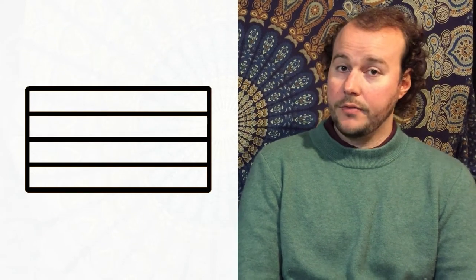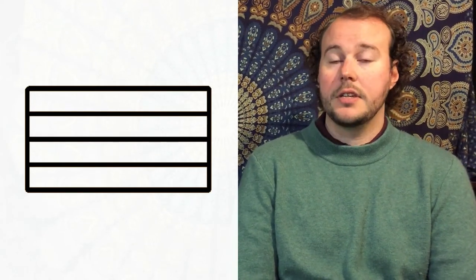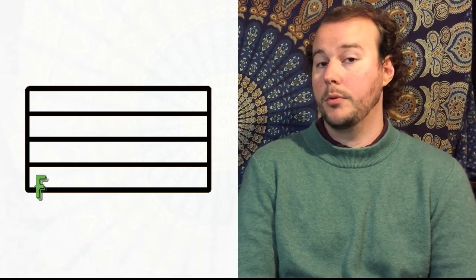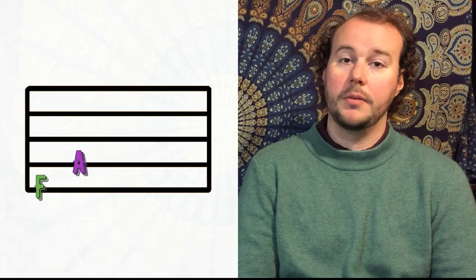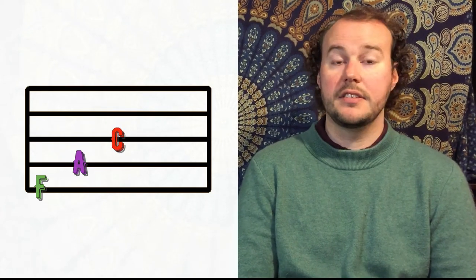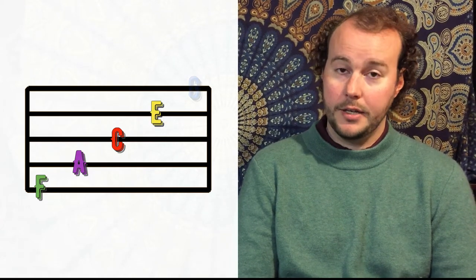So starting with the staff, there are, as I said, five lines. We're going to start at the bottom line and that's going to be F. Then the next line up will be A. Third middle line, as I said, C clef is C. So F, A, C. Next line up is E. And then the top line is G.